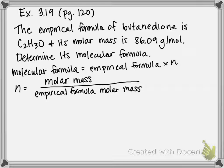We're going to use the two equations that are written here. First we need to solve for N. They gave us the molar mass, which in this case is 86.09 grams per mole. We also need to figure out the empirical formula molar mass. We don't have that, but we do have the empirical formula, and therefore we can solve for the empirical formula molar mass.